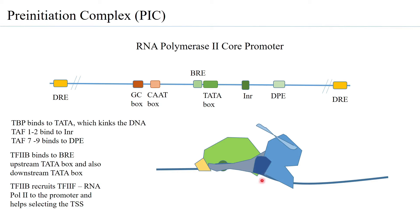TF2F also has a weak helicase activity, and there are many reports suggesting that local unwinding of the DNA is actually initiated by TF2F itself, although the primary formation of the transcription bubble is formed only with the next transcription factor that comes in.